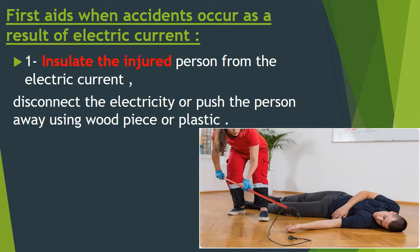Number 1: Insulate the injured person from the electric current. How? By disconnecting the electricity itself, or push the person away using a wood piece or plastic — meaning you are using a bad conductor or an insulator of electricity in order not to get harmed yourself. Remove the person's body or disconnect the electricity to stop the harm.